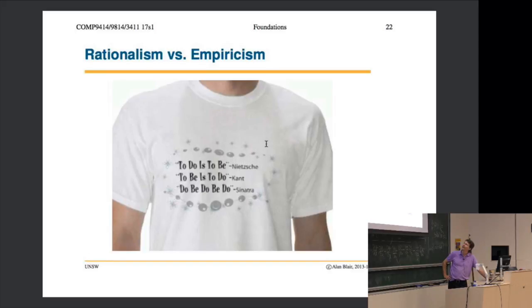Someone tried to sum this up on a t-shirt: Nietzsche is saying 'to be is to do,' Kant is saying 'to do is to be,' and Frank Sinatra is saying 'do be do be do.'